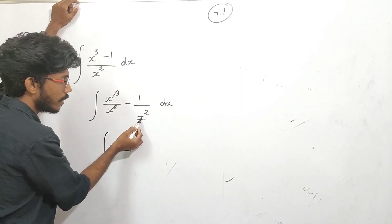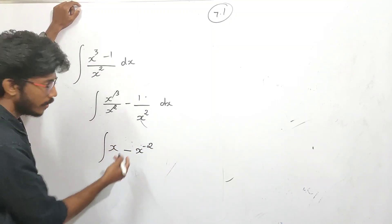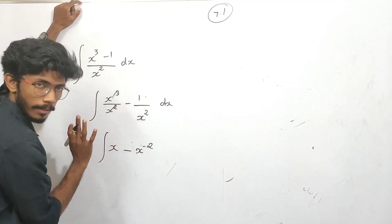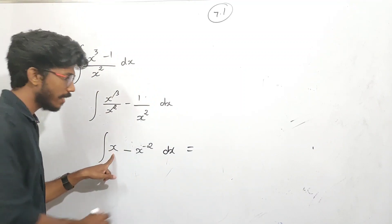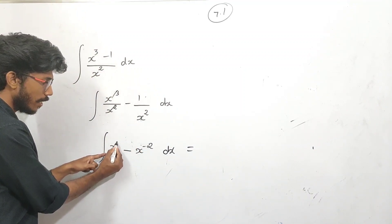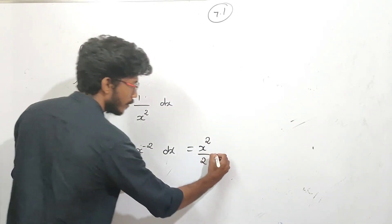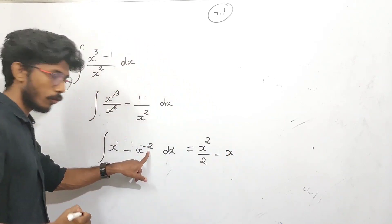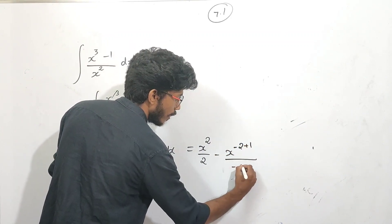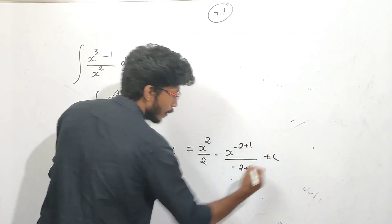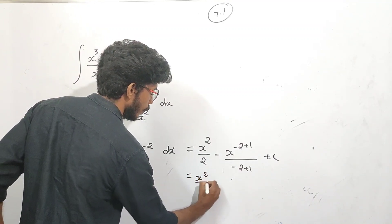1 by x squared is x to the power minus 2. So we will take x squared to the power minus 2. x raised to power minus 2, we need to integrate. Increase the power by 1: minus 2 plus 1 is minus 1. So x raised to minus 1 divided by minus 1, which is x squared by 2, minus 2 divided. We get the formula.